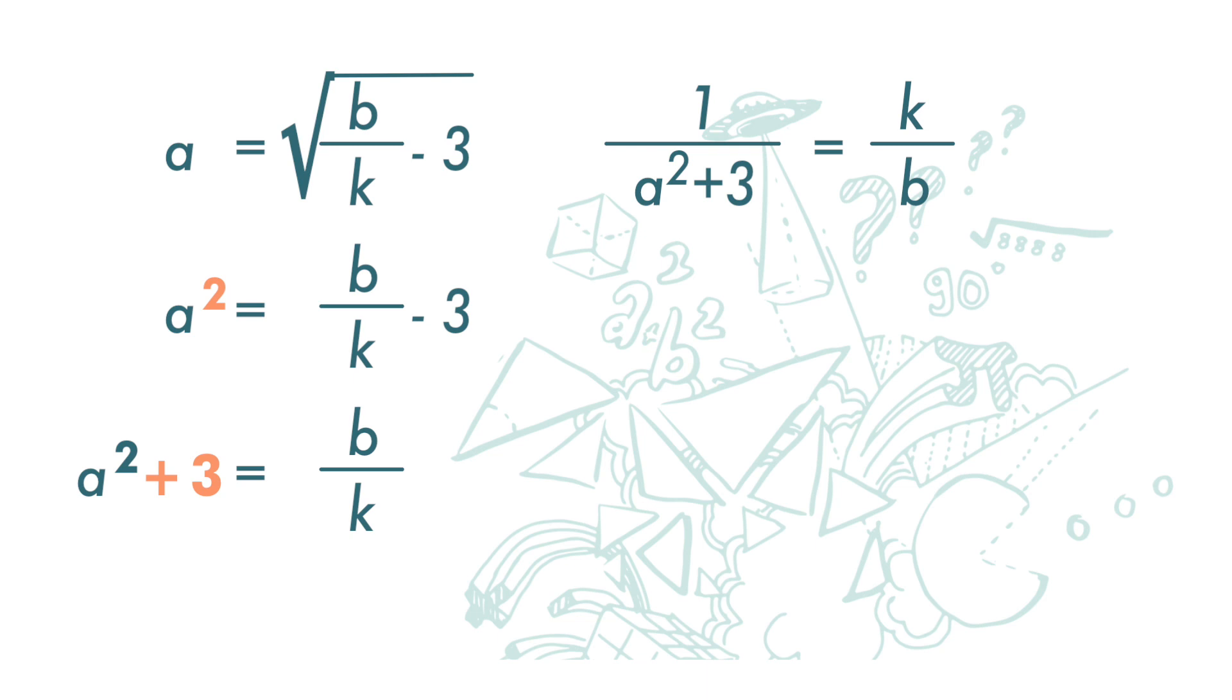Lastly, we move the b over to the other side. Divided by b, when moved over, becomes multiplied by b.